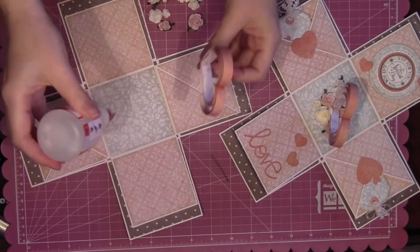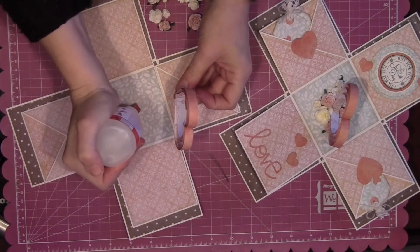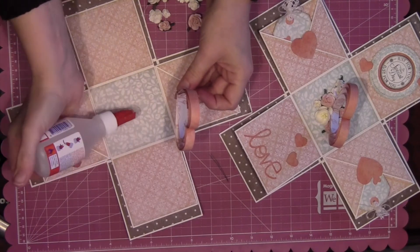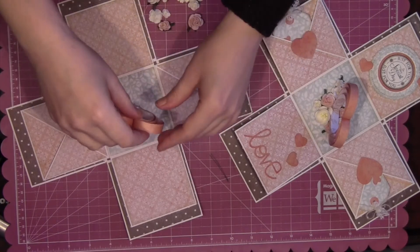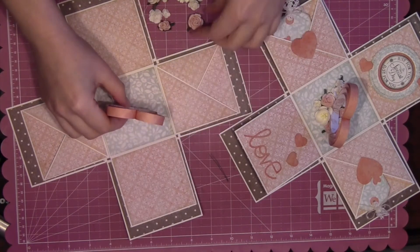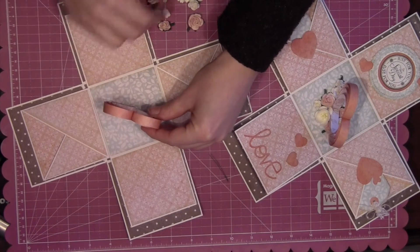Once it's dry, we want to attach it to the inside panel on your inside box card. So you want to use quite a lot of glue. You've got a nice flat surface on the bottom of the heart where you've stuck those papers together, so it gives you a good surface to balance on.